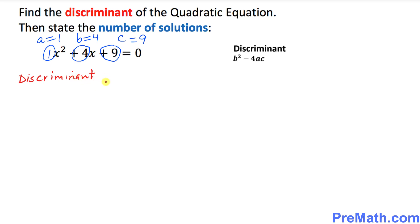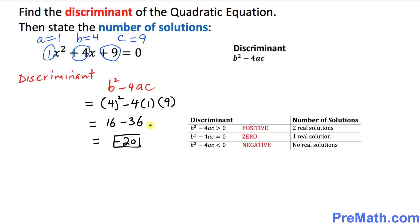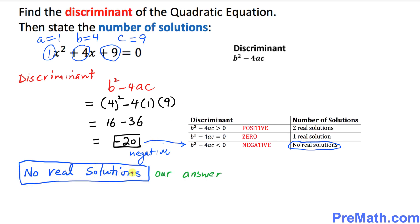The discriminant is b squared minus 4ac. Plugging in the values: b is 4 squared, minus 4 times a which is 1, times c which is 9. That gives us 16 minus 36, so our discriminant value is negative 20. Since the discriminant is negative, that means we have no real solutions.